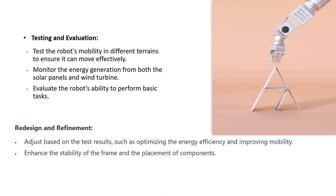Testing and evaluation: test the robot's mobility in different terrains to ensure it can move effectively, and monitor energy generation from both the solar panels and wind turbine. Evaluate the robot's ability to perform basic tasks. Based on test results, redesign and refine the project — adjust for energy efficiency, improve mobility, and enhance the stability of the frame and placement of components.